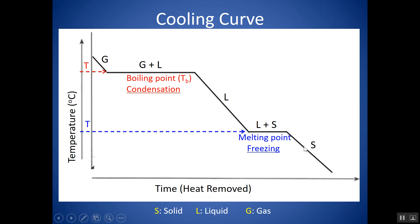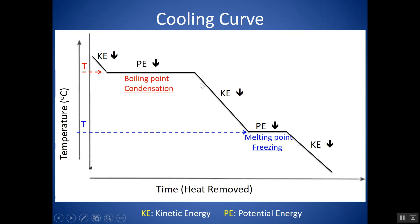Once it's totally solid and you remove heat, the temperature can go down again. Just as before, kinetic energy is changing on the diagonals — temperature is going down, so kinetic energy goes down. Temperature is constant on the flat lines, so kinetic energy is constant there. Rather than kinetic energy changing, potential energy is changing — energy is going into moving the particles closer together and forming more intermolecular forces.